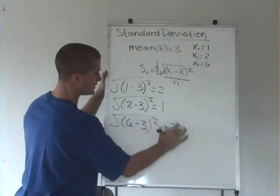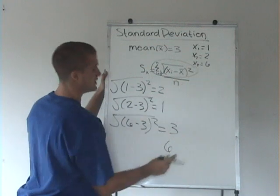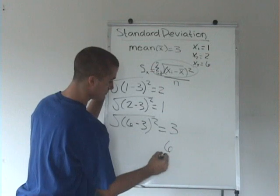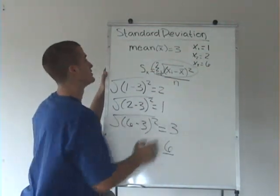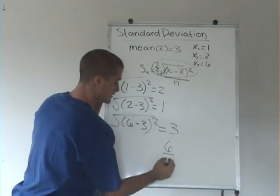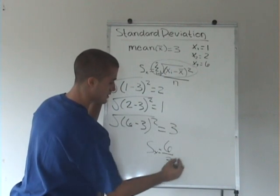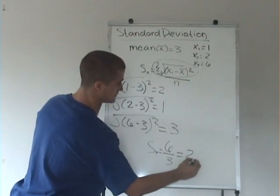Alright, so we're going to add these 3 up and get 6. So this whole top term here is 6. And then we're going to divide by this n. n is the number of observations in this set. So there's 3 observations, we're going to divide it by 3. So we have the standard deviation of this set is 2.